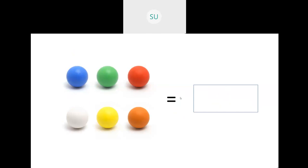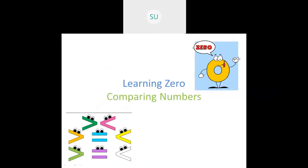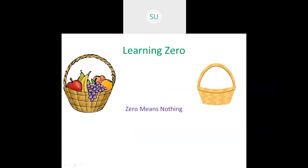So this was numbers from 1 to 9. Then we learned what is 0. After numbers from 1 to 9, we saw learning 0 and comparing numbers. Here, we have a basket of fruits. After you eat all the fruits you will have nothing left, so there are 0 fruits in the basket. So 0 means nothing, and 0 is written like an egg or an O. 0 comes before 1.